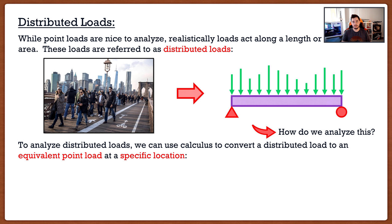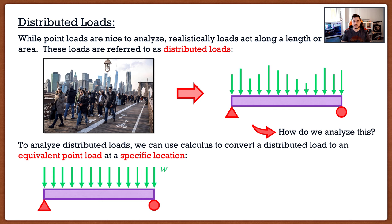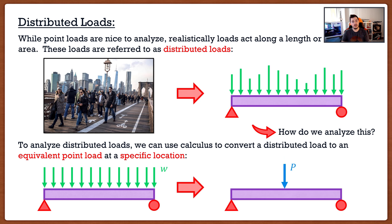We are actually going to do something very simple. Every distributed load can be replaced with one point load at a specific location. So if I had a case with a uniformly distributed load, I can actually convert this into an equivalent point load located at a very specific distance from the edge, and we can do this with all distributed loads. We take our complex situation and make it simpler, so we can analyze it with everything we learned in the first half of this course. That's all of engineering — we take very complex situations and make them simple so that we can analyze them.